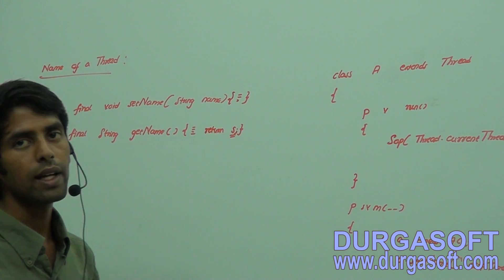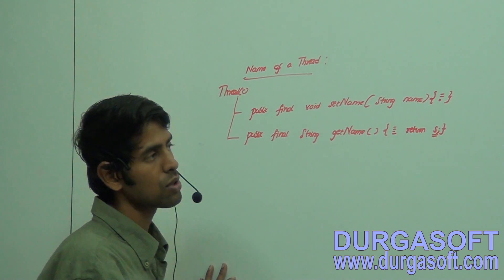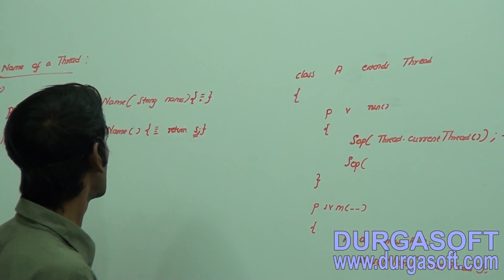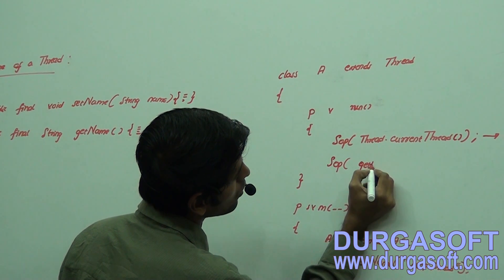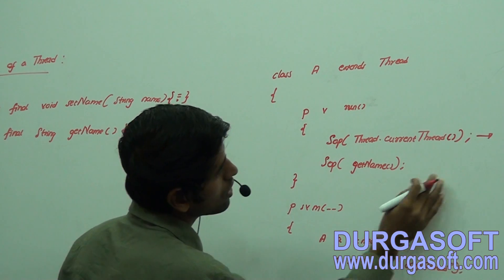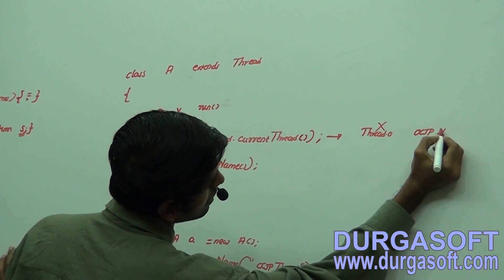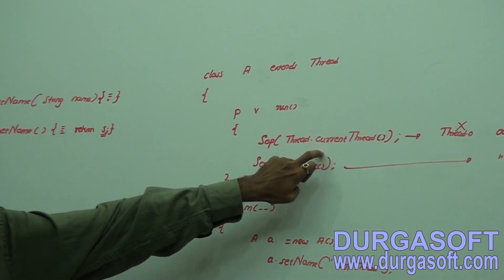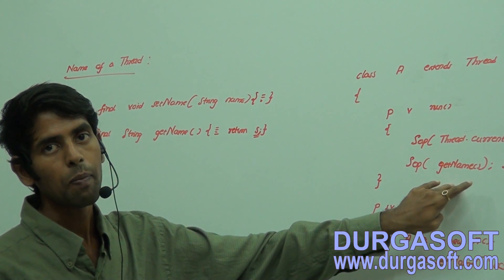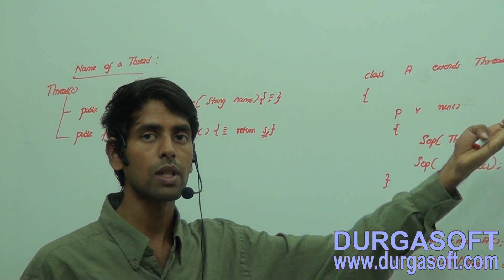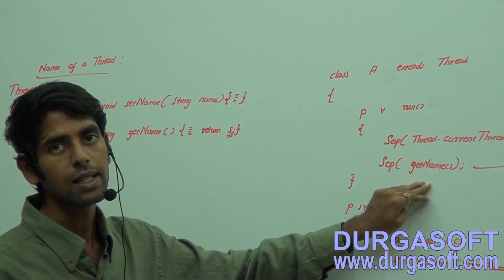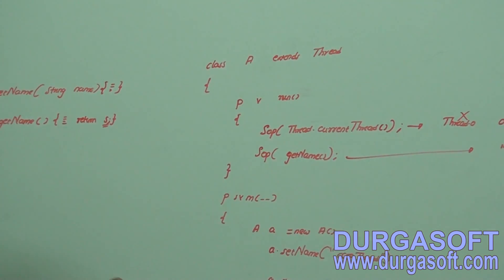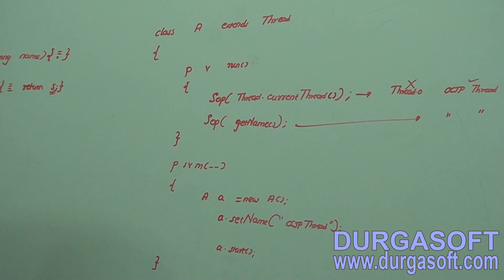After calling a.setName('ocjp thread'), if I call Thread.currentThread() it will give 'ocjp thread'. I can also call getName() directly to get the thread name. The difference is: Thread.currentThread() returns the thread name along with thread group, priority, and parent thread info, whereas getName() returns only the name of the thread. So the output for Thread.currentThread() will be something like Thread[ocjp thread, default_priority, main], and for getName() it will just be 'ocjp thread'.